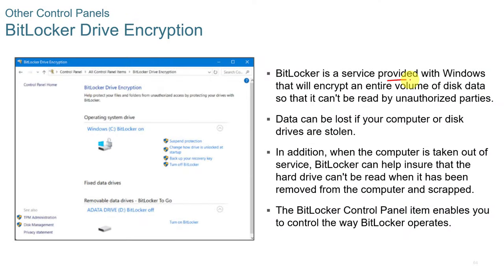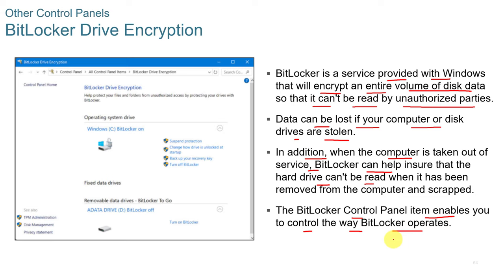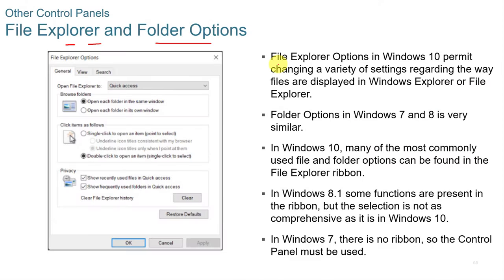BitLocker Drive Encryption is a service that encrypts an entire volume so it can't be read by unauthorized parties. It helps protect data if a computer or disk drive is stolen or taken out of service. Be sure to properly save your BitLocker credentials, as the encryption is difficult to crack if proper passwords are set. File Explorer Options in Windows 10 permit changing a variety of settings regarding how files are displayed; many of the most commonly used options can be found in the File Explorer ribbon.